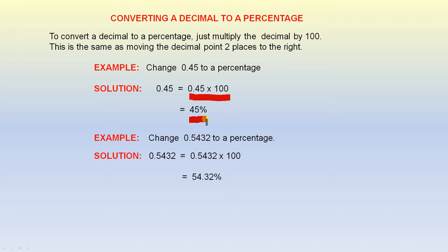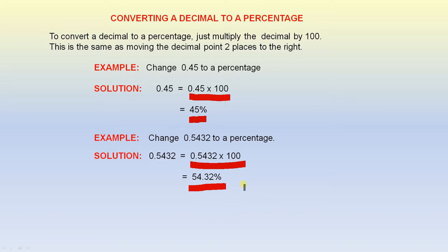We just move the decimal point two places to the right. Change 0.5432 to a percentage. You multiply 0.5432 by 100 — that is the same as moving the decimal point two places to the right — and the answer is 54.32%.